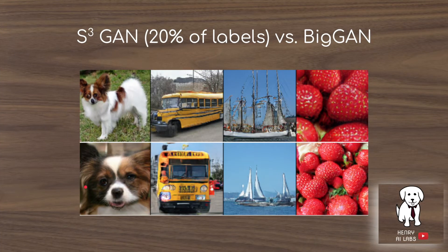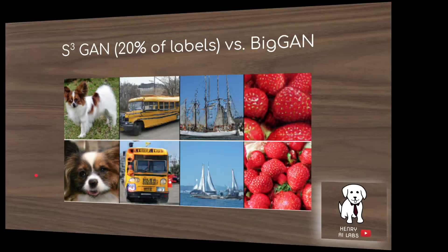Here are some of the generated samples. This is from the S3GAN technique and this is from BigGAN. Both are 128 by 128 ImageNet generated samples.